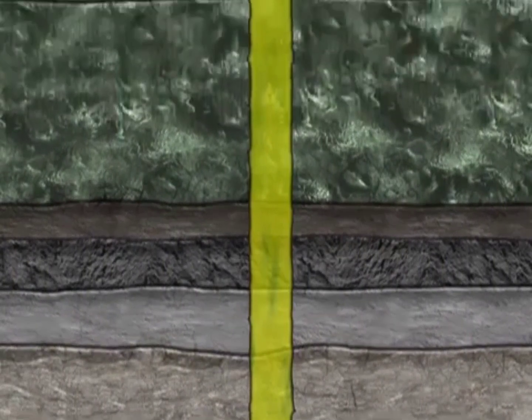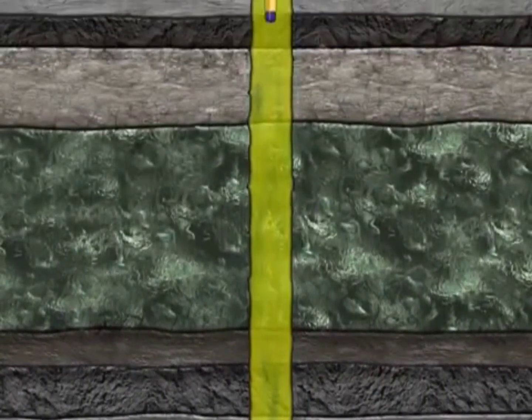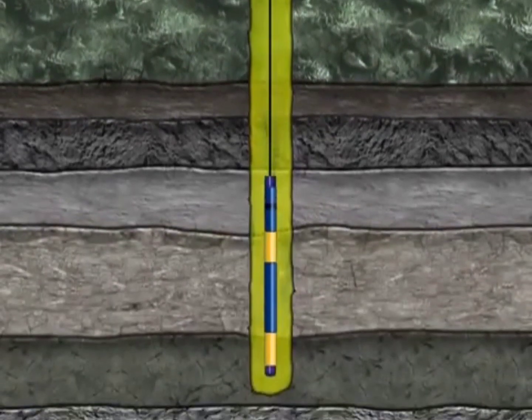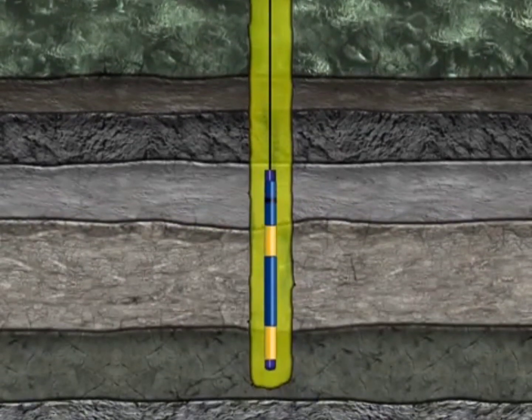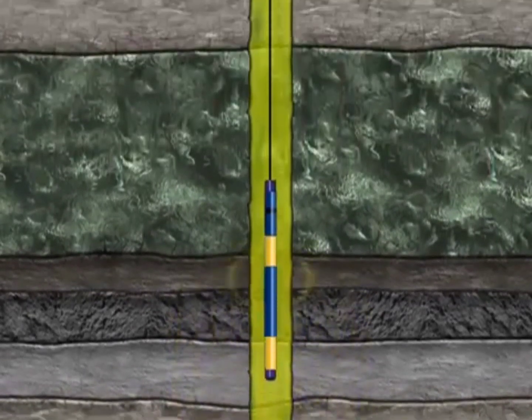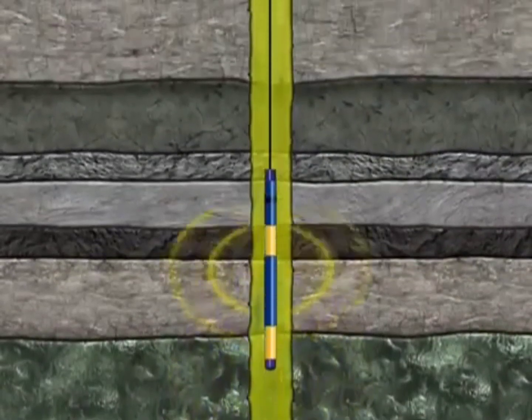It is a common practice to lower wireline logging tools to evaluate the formation and determine the economic feasibility of the drilled well. This is done by logging the anticipated payzone through various types of sensors to determine the key properties of the zone.